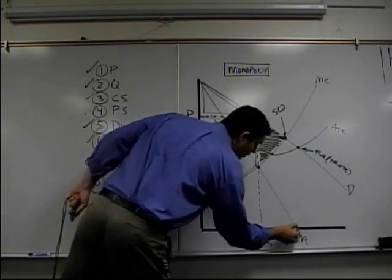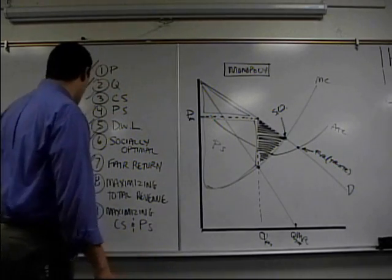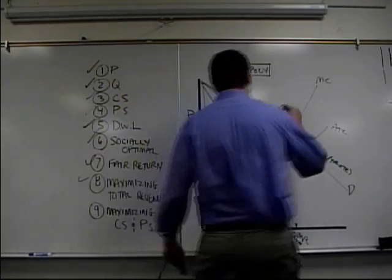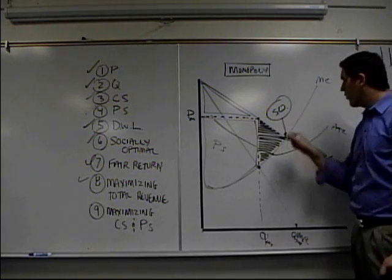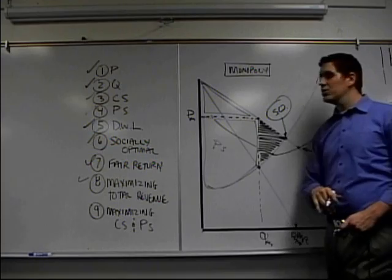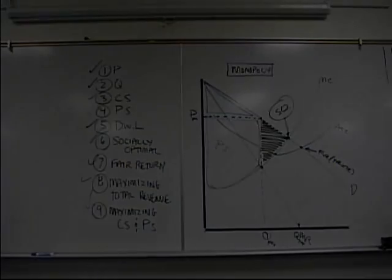Next one, maximizing total revenue. That's when marginal revenue hits zero. That's the quantity. Maximize total revenue. And then last one, maximize consumer producer surplus. Well, you can't maximize better than socially optimal. If we produce this quantity, we'd have the most consumer and producer surplus just like perfect competition. Check nine. That's it. Till next time, done.